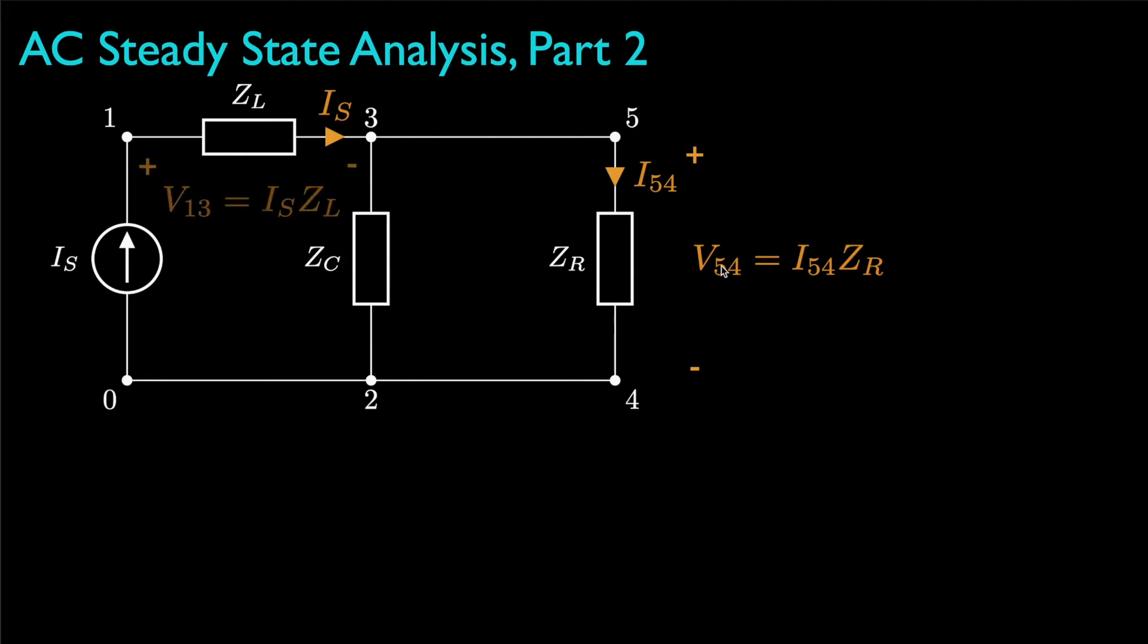Likewise, if we wanted to find the voltage drop from node 1 to node 3, we could apply the same relationship to the impedance for the inductor. And finally, we could evaluate the voltage drop from node 1 to node 0 as the drop from node 1 to node 3 plus the drop from node 5 to node 4, which is the source current times the impedance for the inductor plus the current from node 5 to node 4 times the impedance for the resistor.